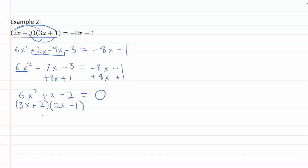So if I multiply together the outsides, I'll get minus three x, multiply together the insides, I'll get four x. Four x minus three x will give me this plus x in the middle, good.